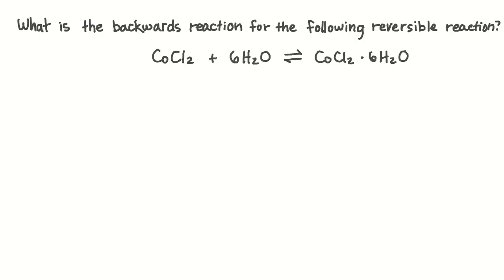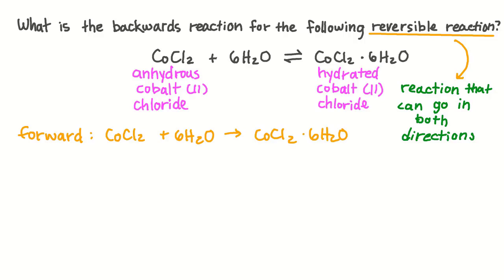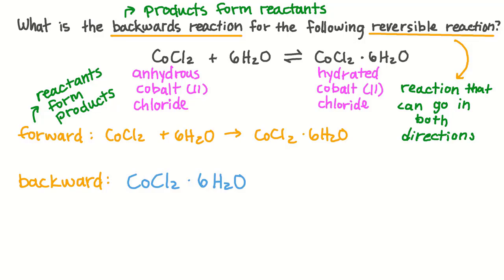What is the backwards reaction for the following reversible reaction: COCl2 plus 6H2O in equilibrium with COCl2·6H2O? A reversible reaction is a reaction that can go in both directions. That means that not only can this reaction go in the forward direction, where the anhydrous COCl2 reacts with water to form hydrated COCl2, but the reaction can also go backwards. In the forward direction the reactants form the products, but in the backwards reaction the products form the reactants. So the backwards reaction for this reaction would be our products, COCl2·6H2O, reacting to form our reactants, the anhydrous COCl2 and water.